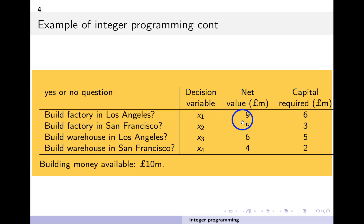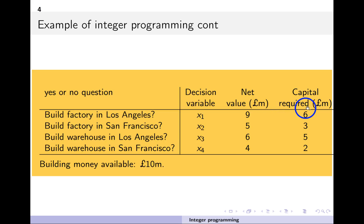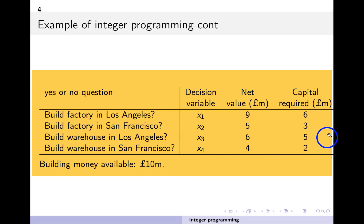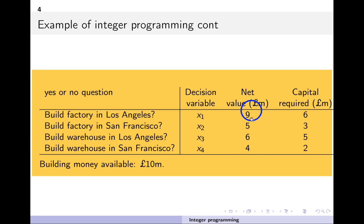Each one of these decisions creates a net value in millions: building a factory in Los Angeles creates a value of 9 million, in San Francisco it's 5 million. But it also requires capital: a factory in Los Angeles requires 6 million, in San Francisco it's 3 million. We have a budget of 10 million for capital. The problem is to decide what factories to build, where they go, and where to put a warehouse. We want to maximize the net value subject to a capital constraint.